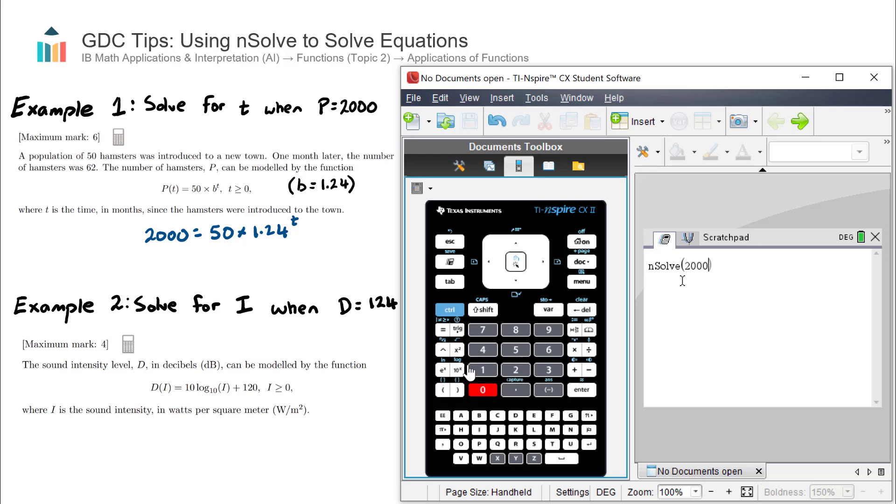So it's 2000 = 50 × 1.24^t. Now we need to tell the calculator what to solve for, so we put comma t, then hit enter, and we get the solution.